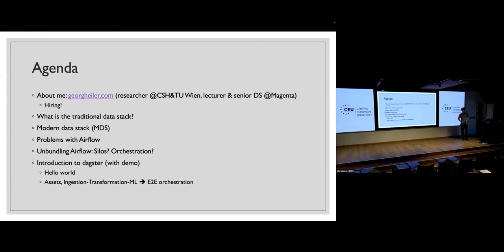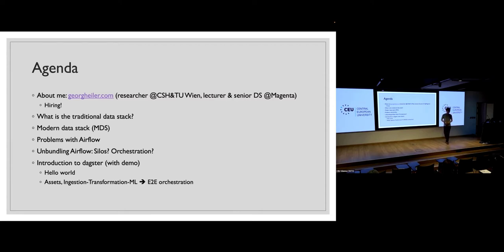I'm a PhD student at the Complexity Science Hub of Vienna and TU Wien, a lecturer in Innsbruck and Stuttgart, and also a senior data scientist at Magenta in Austria. At the company we're always hiring for engineering roles, and at the university we're looking for motivated master's students and PhD candidates. If you're interested, talk to me later or hit me up on LinkedIn.